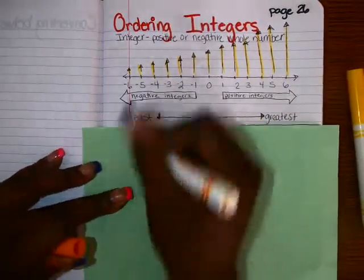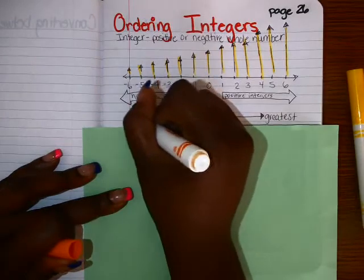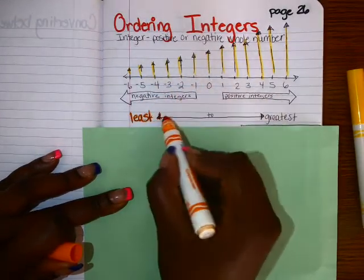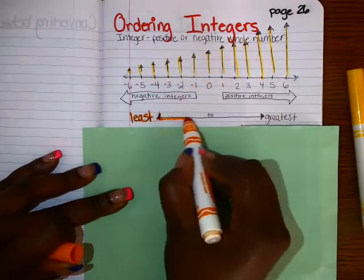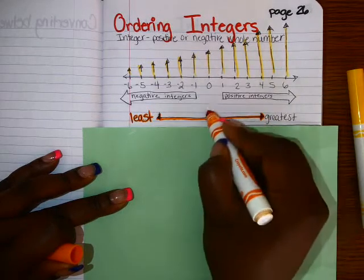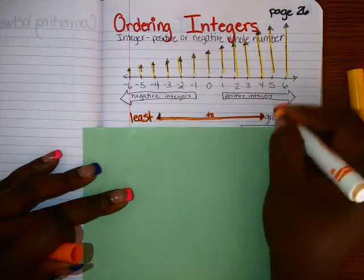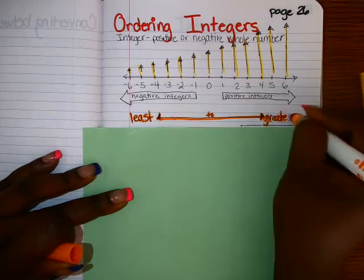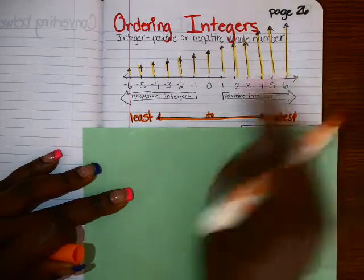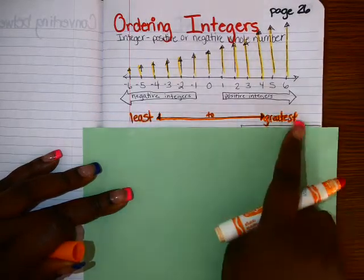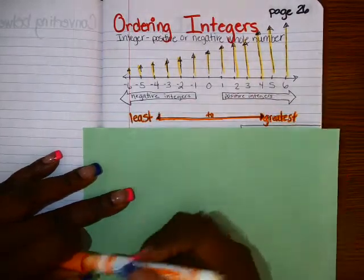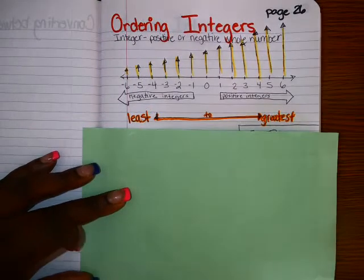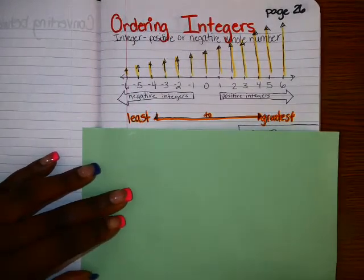So just like I was telling you, all the small integers are negative, and the number line goes to the greater integers — least to greatest or greatest to least. So whenever ordering, a number line is a great tool to use.